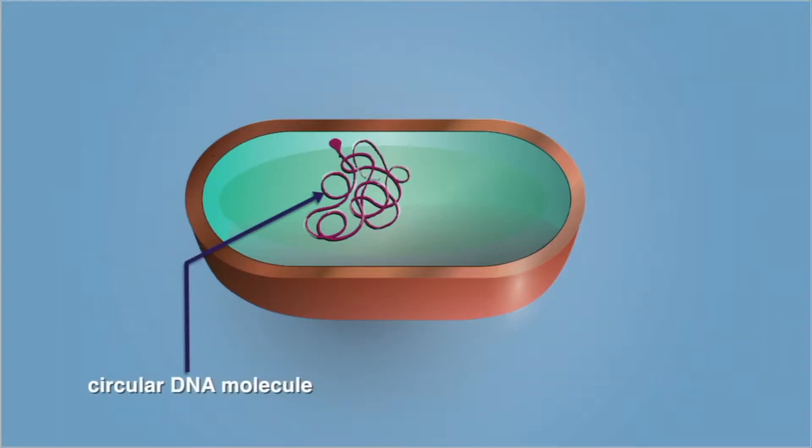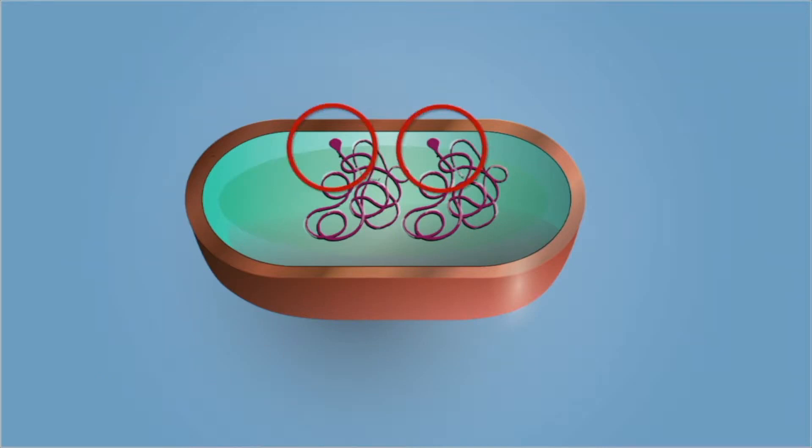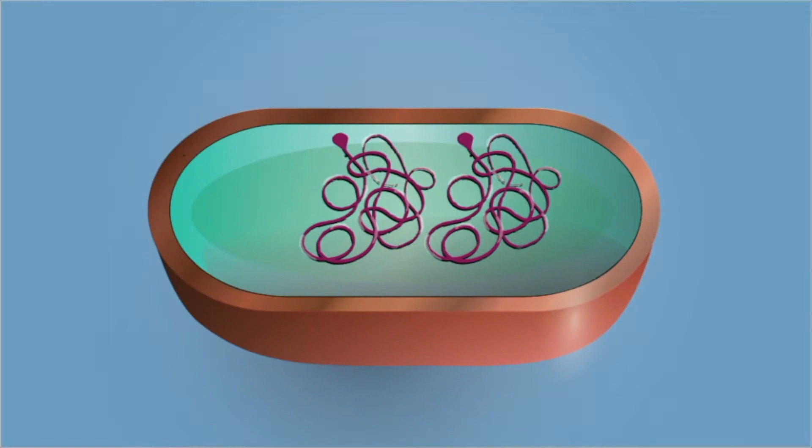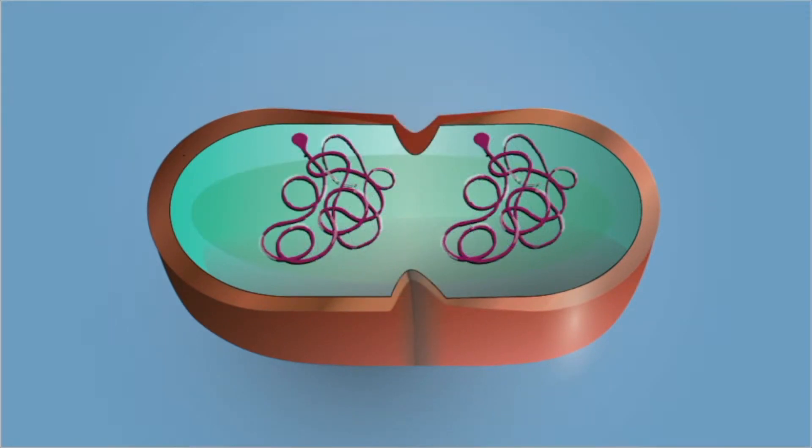The circular DNA molecule replicates. It then attaches each copy to a different part of the cell membrane. The cell grows to twice its size and the membrane pinches in the middle. The cell can now undergo binary fission.